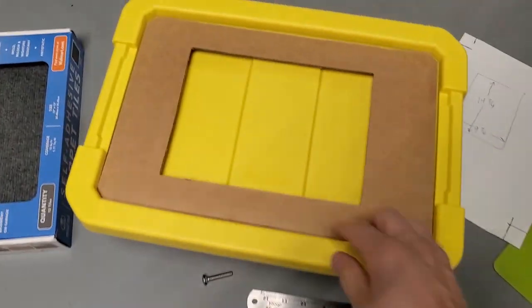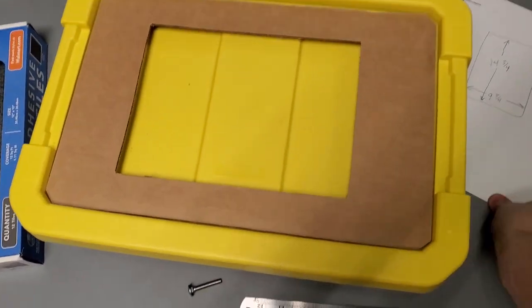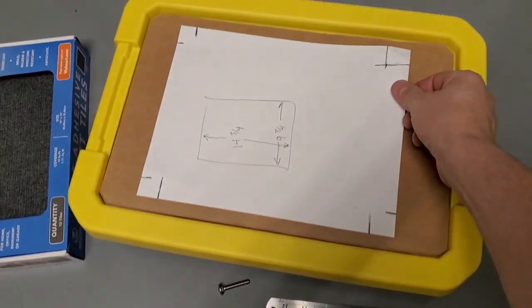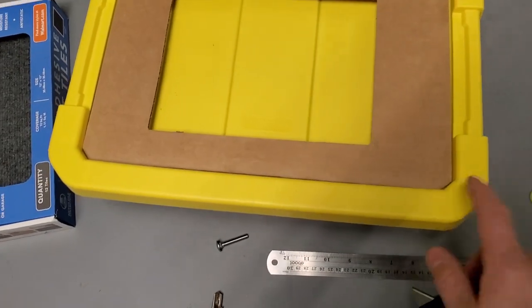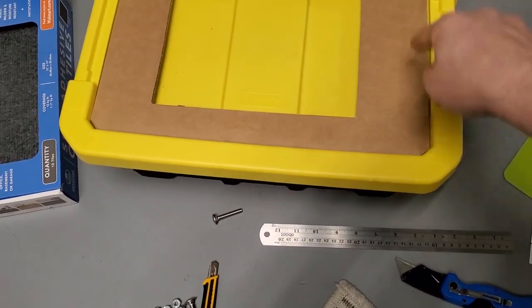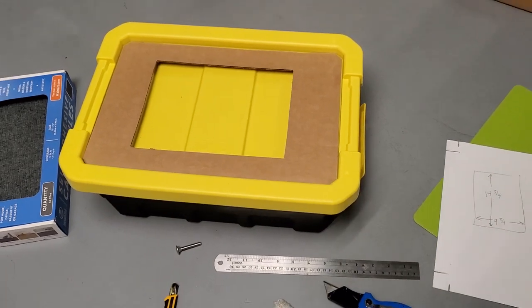All right. So we've got the top piece cut out and the paper's going to go over that and taped on. But now I'm just going to cut out the interior and then put some holes in for the carriage bolts and it should be good.